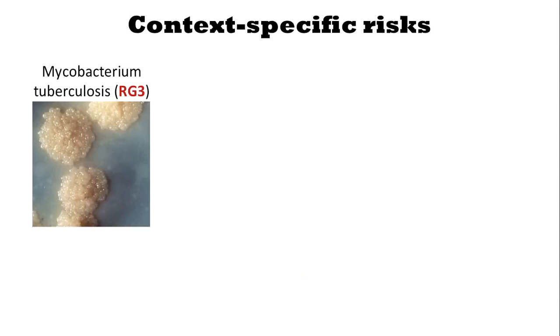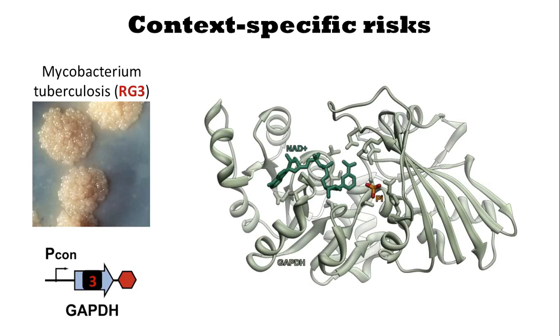It's important to note that the risk group of the organism that a sequence is from is not the entire story. For example, if we're interested in GAPDH from Mycobacterium tuberculosis — a risk group 3 organism — and we build a very simple device that is simply the GAPDH from that organism in front of a constitutive promoter, that sequence is from a risk group 3 organism, but the device is simply going to produce GAPDH. This device would be harmless, despite the fact that the sequence comes from risk group 3. So it's always important to consider the context of the device.